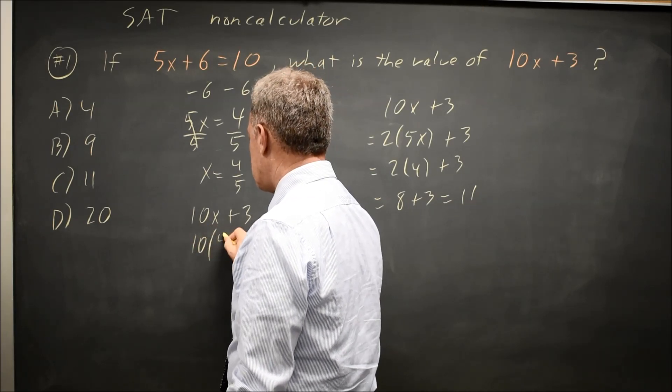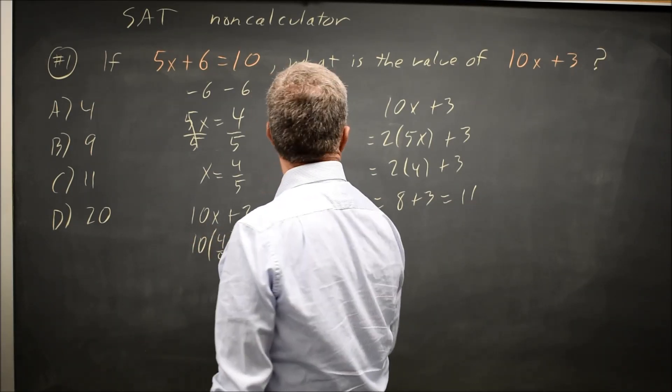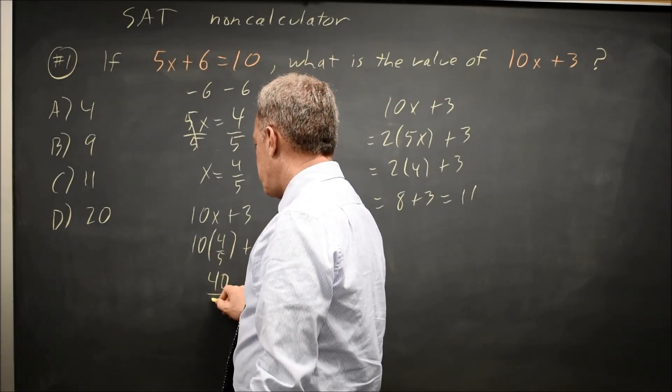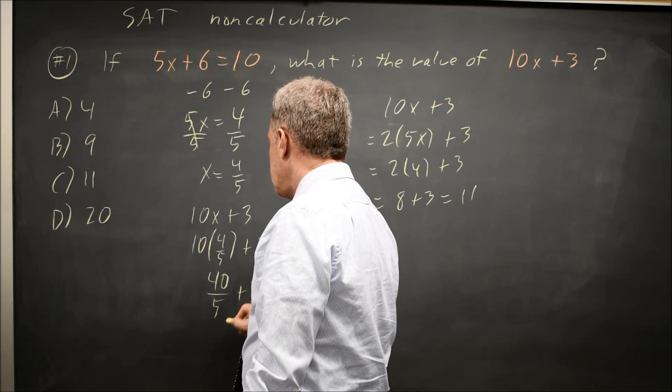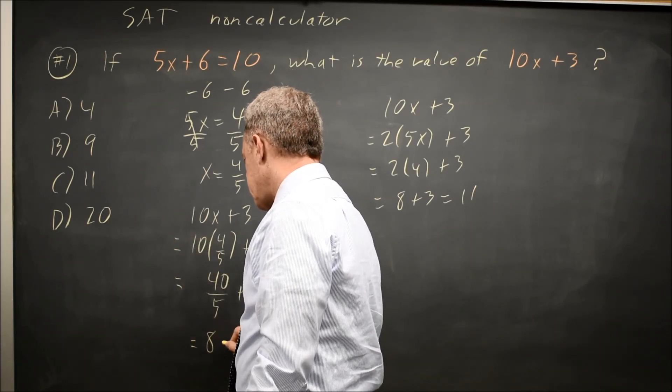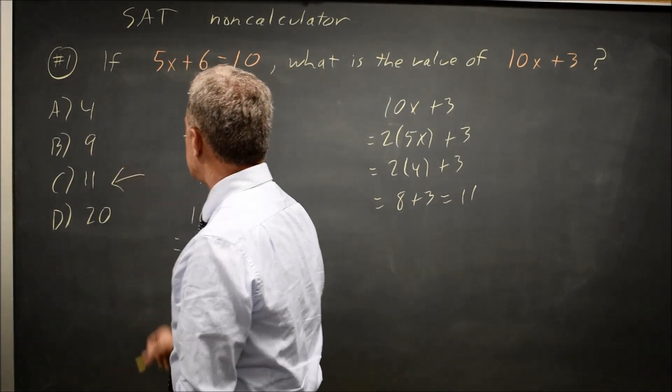That is 10 times 4 fifths plus 3. 10 times 4 is 40, so it's 40 over 5 plus 3. And 40 over 5 is 8, so this is 8 plus 3, which is again, 11, choice C.